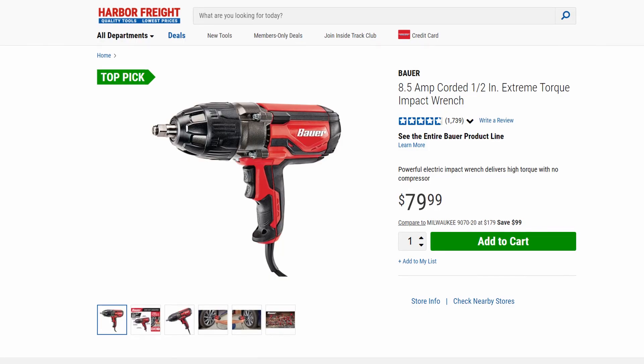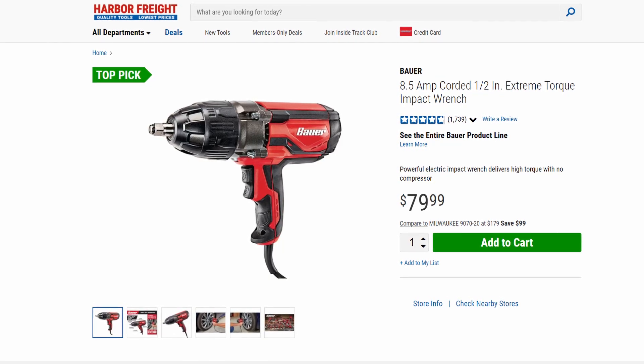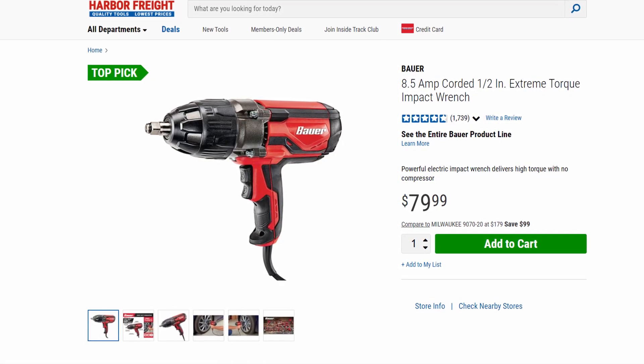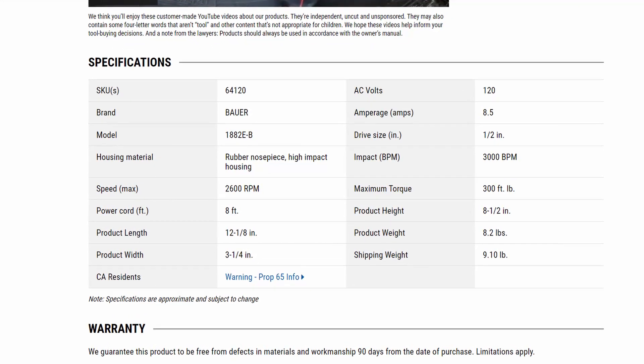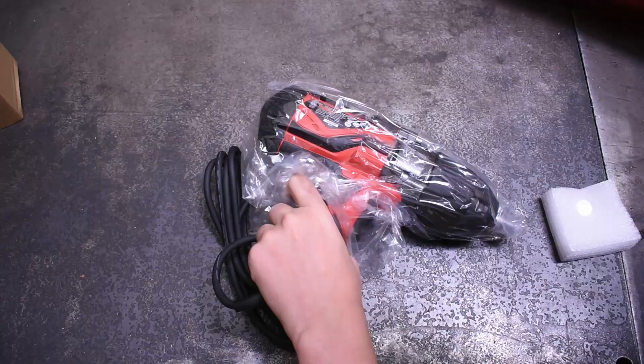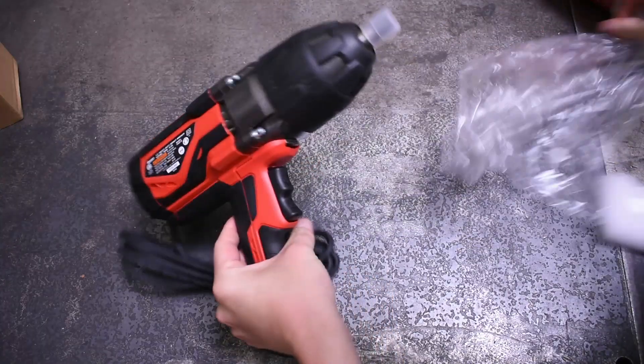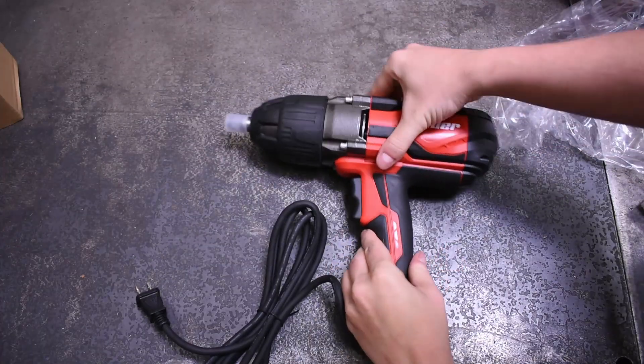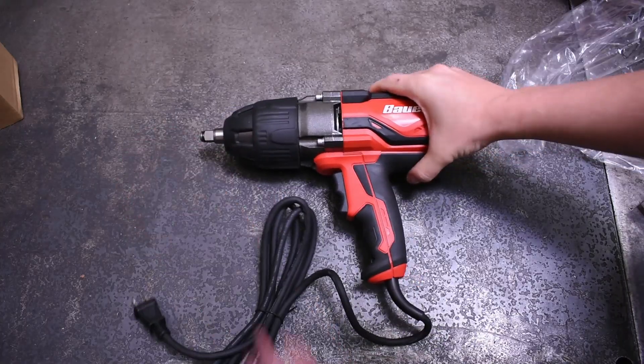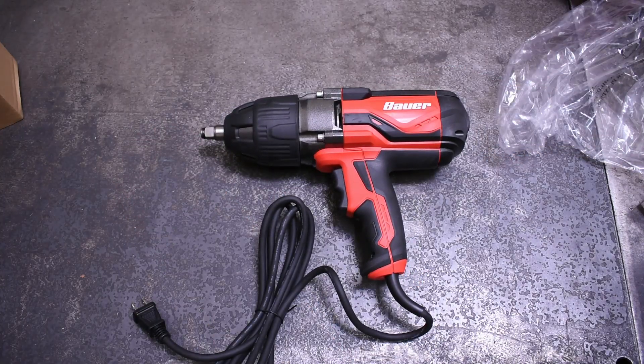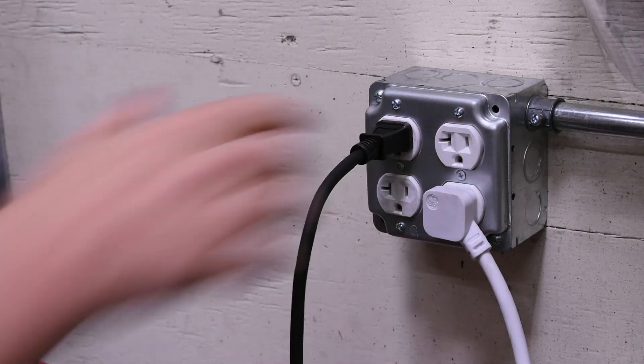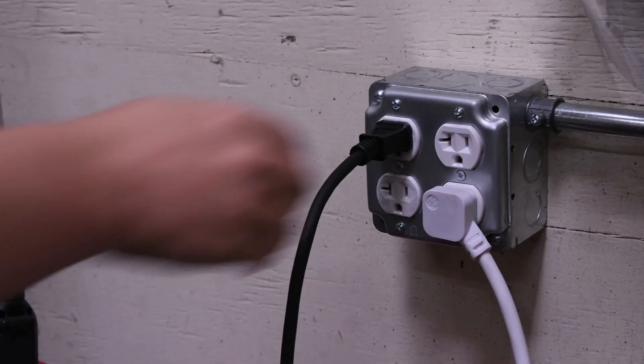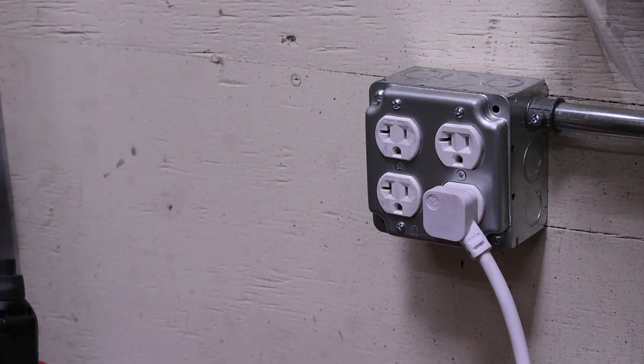We picked up this Bauer 8.5 amp model 64120 from Harbor Freight for a steal of a price quite a long time ago. Once we got it to the shop we quickly realized we would not be able to test it without an extension cord, which since we're all about testing versus the numbers on the box, seemed unfair. Fast forward a few months, we had this power outlet installed in the shop close to the dyno just for this experiment, which also allows us to test with and without an extension cord for more real world comparison.